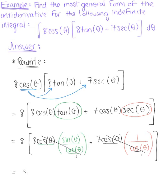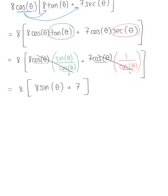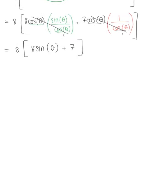So the cosine of theta in the numerator cancels with that of the denominator, and we're left with the expression 8 multiplied by 8 sine of theta plus 7. This is much easier to work with. We know how to integrate, so we're ready to anti-differentiate.